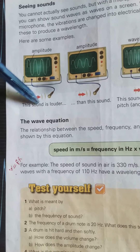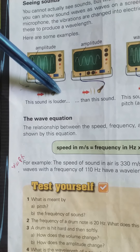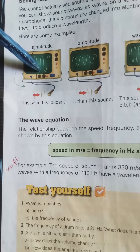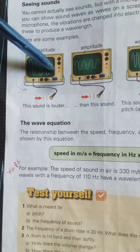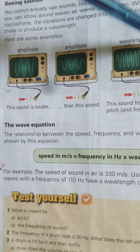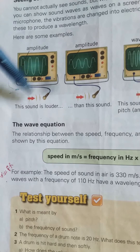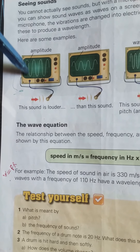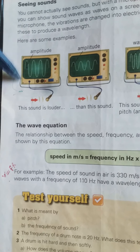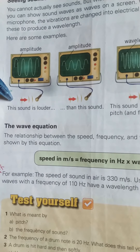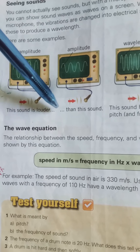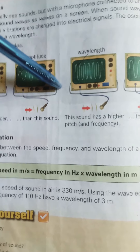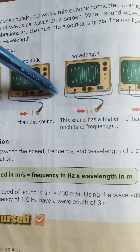The oscilloscope is connected to a microphone. When we speak into the microphone, vibrations are produced. The microphone converts these vibrations into electrical signals, which are then displayed on the oscilloscope screen. If we produce a louder sound, the amplitude shown on screen is greater from the middle line. If the sound is softer, it produces a lesser amplitude.